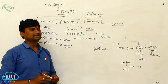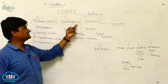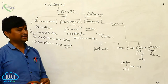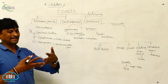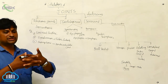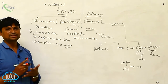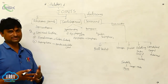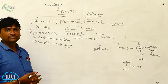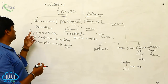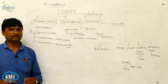Based on their characteristics, joints are classified into three types: fibrous joints, cartilaginous joints, and synovial joints. The first one is fibrous joints. Fibrous joints are highly tightly overlapped from one joint to another and do not show any type of movement. This is called synarthrosis. Synarthrosis means no movement at all is permitted.